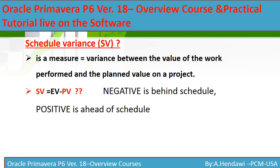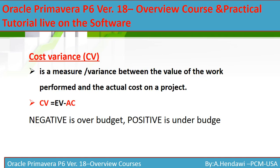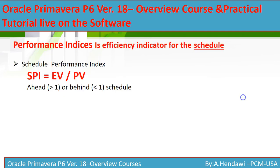Cost Variance (CV) is a measure between the value of work performed and the actual cost. CV equals Earned Value minus Actual Cost. If negative, you are over budget — meaning your actual expenses are more than what you planned. If positive, you are under budget.